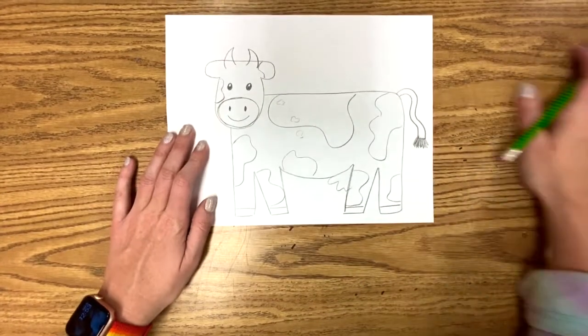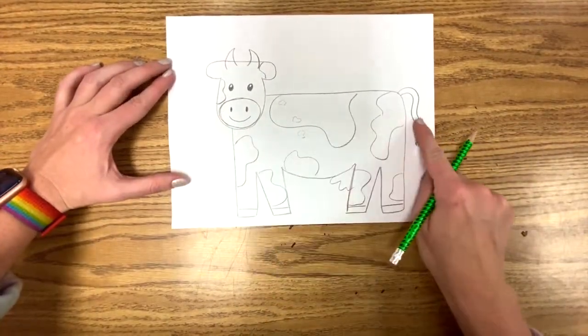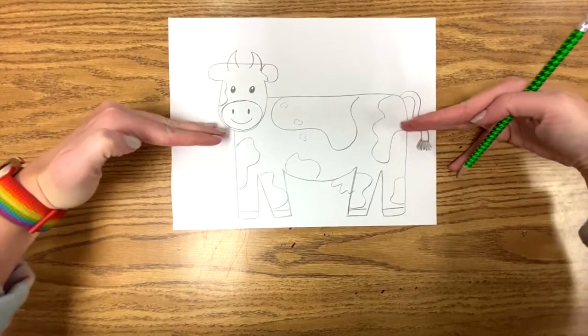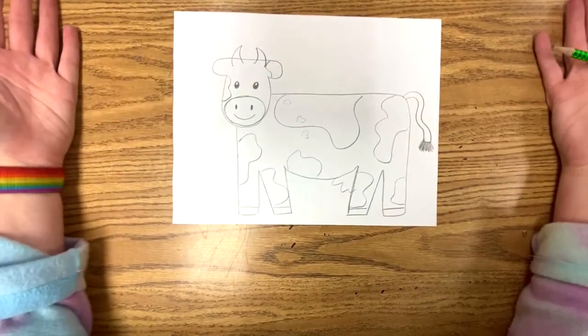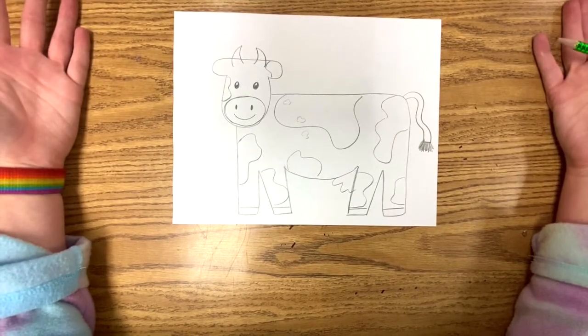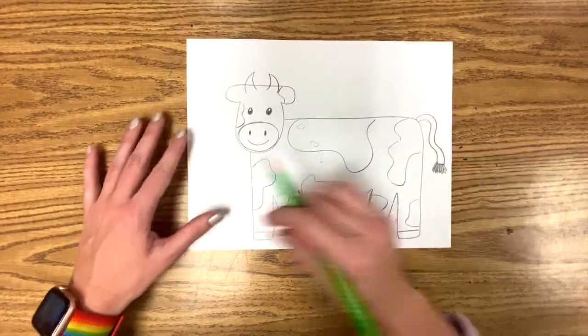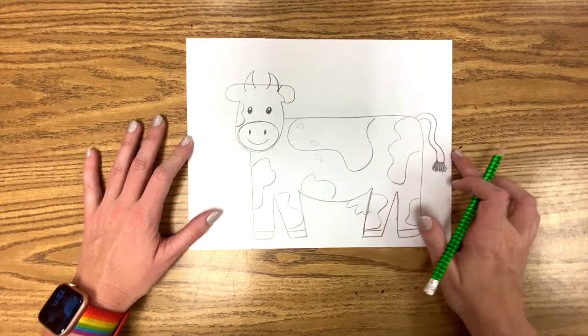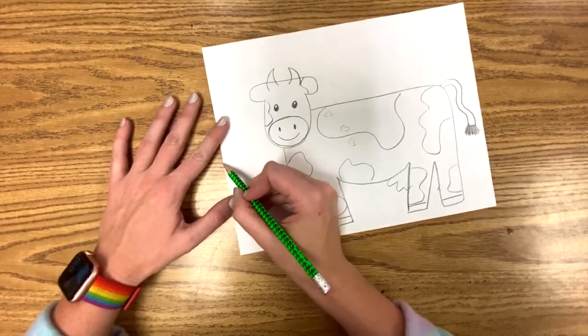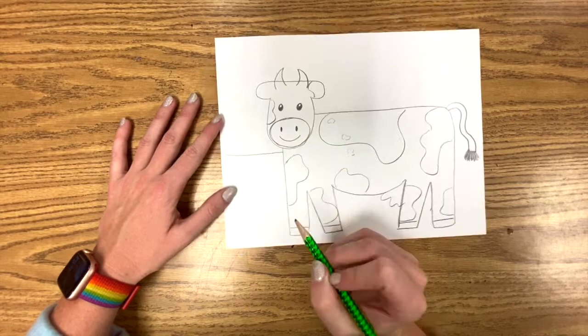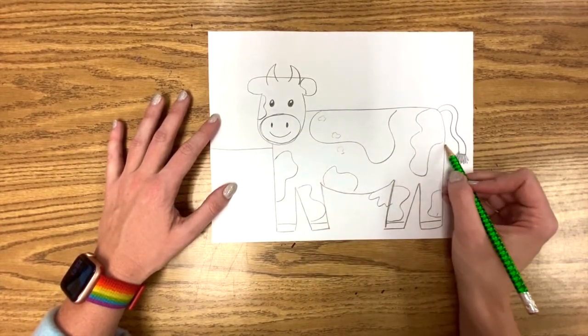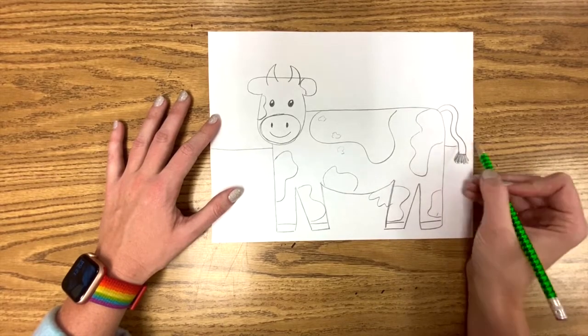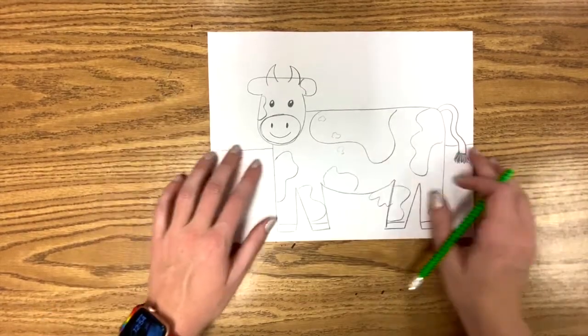And before we outline in color, let's go ahead and add a horizon line. That is the line that separates the sky from the ground. Because right now, we don't know where this cow is. It's floating in space. So let's add a horizon line. All I've got to do is straight line here. Let's pretend it's on top of the cow, but not really. There we go. And continue. Continue.